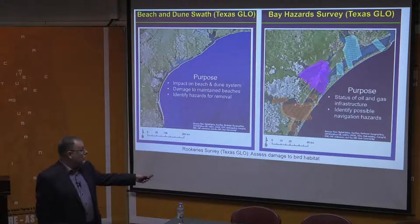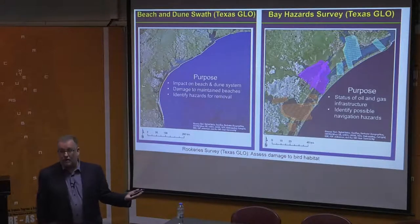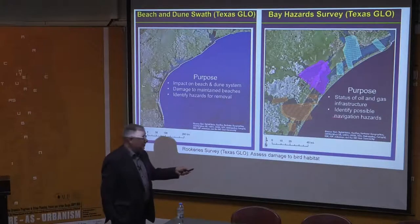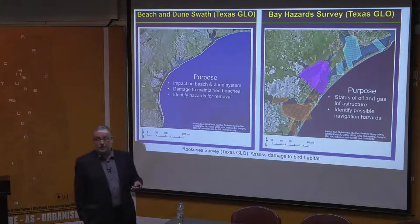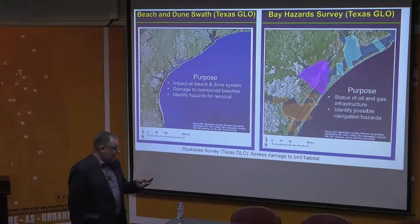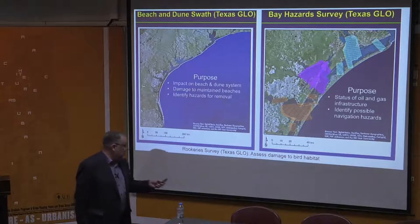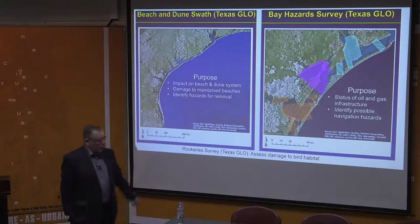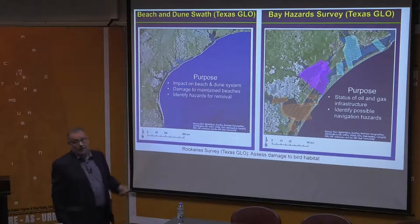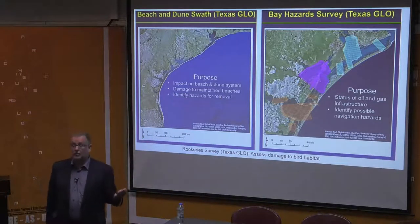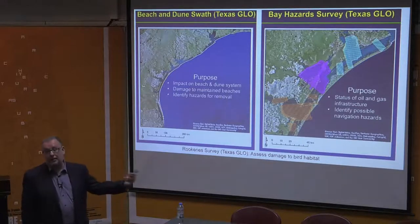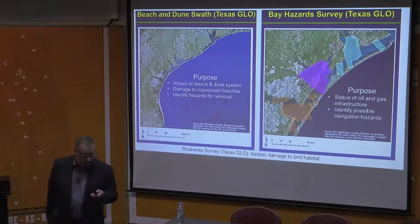There is a tremendous amount of infrastructure along the coast, and there was great concern about the status of oil and gas infrastructure and how it may have been compromised by these storms. The whole coast is also a very important migratory pathway for birds of all of North America, so a great deal of effort goes into assessing bird habitat along the coast.